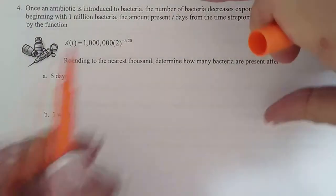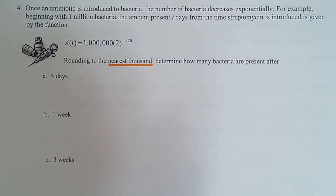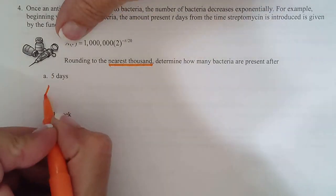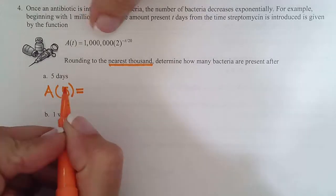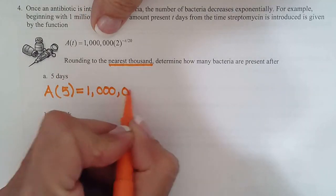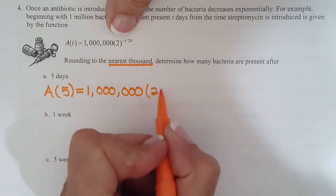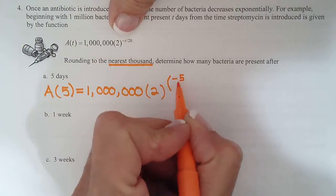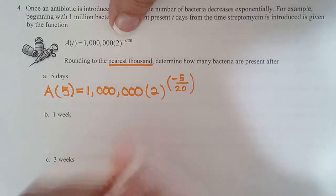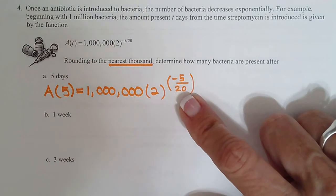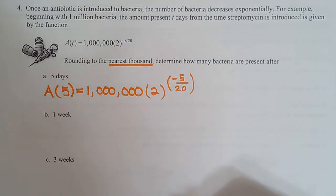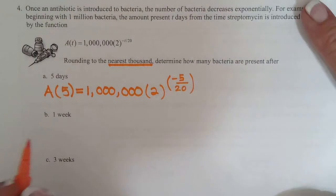So this one says round to the nearest thousand, so anytime there's rounding, you should either write it on your paper or underline it. Determine how many bacteria are present. So this is telling me put 5 in everywhere I see a T. So A of 5 is 1,000,000 was a starting number of bacteria, times 2 to the negative 5 over 20. And remember how I told you whenever it's a fractional exponent or a negative exponent, it needs to be in parentheses? Well, this is both. It's a fraction and it's a negative, so make sure you put it in parentheses when you type it in your calculator.